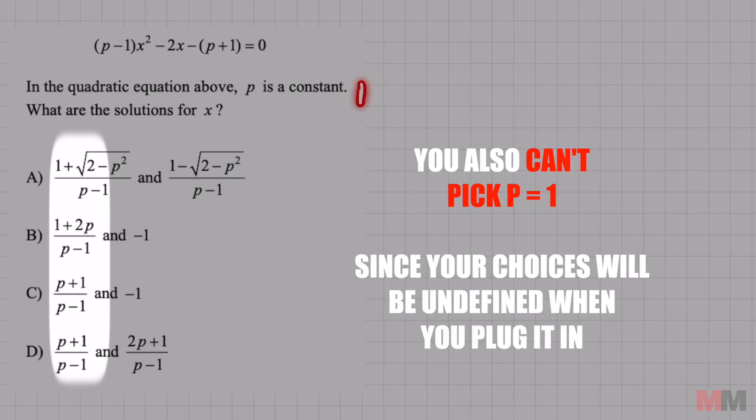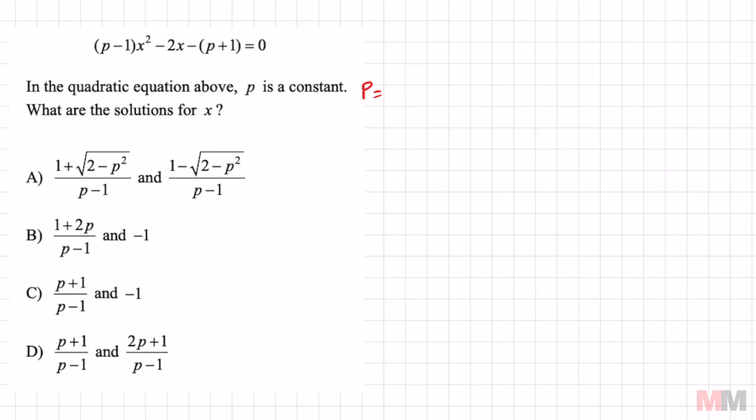The next number that you cannot pick is one. Because if you plug in one in the answer choices, you're going to get undefined values because you can't put a zero in the denominator. So one won't work. Last resort is to pick p equals two.